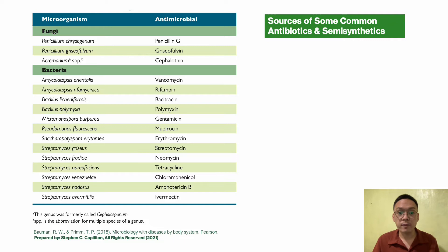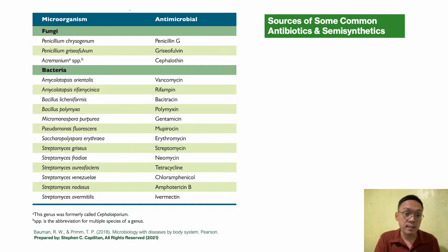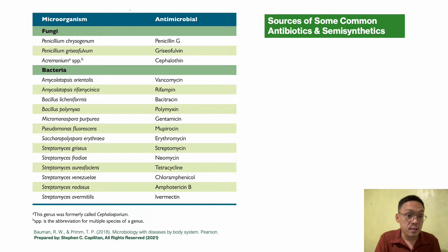The next table shows the sources of some common antibiotics and semi-synthetics. From fungi, we have Penicillium chrysogenum, Griseofulvum, and Acremonium species, which produce antimicrobials like penicillin G, griseofulvin, and cephalothin. From bacteria, species such as Amycolatopsis orientalis, Bacillus licheniformis, Micromonospora, Pseudomonas, Saccharopolyspora, and Streptomyces produce various corresponding antimicrobials.